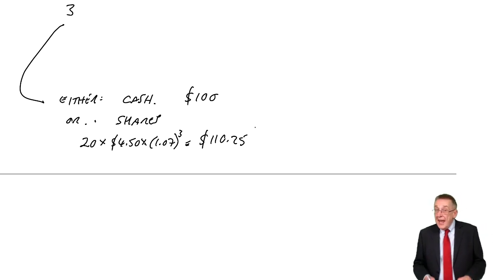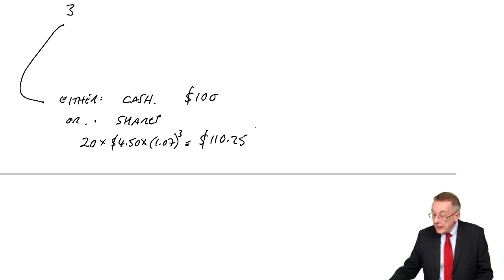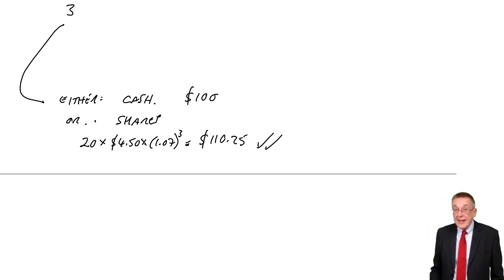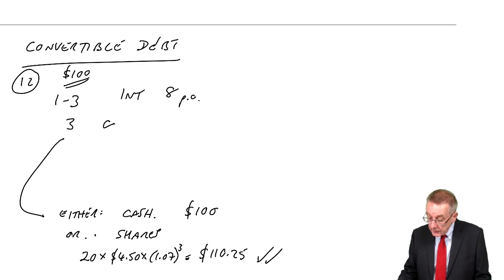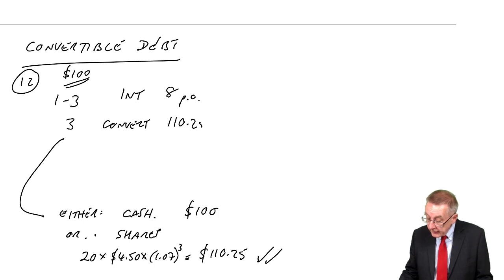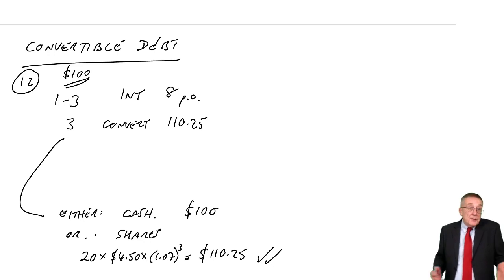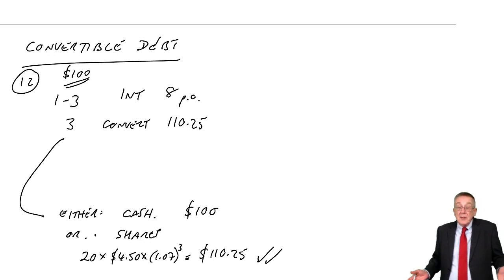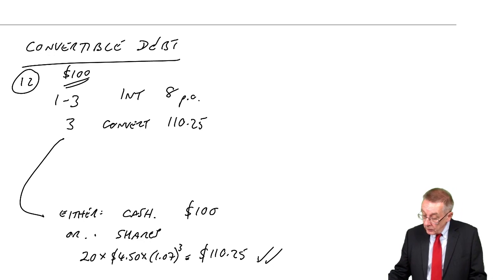As of today, what do they expect to receive on redemption? They'll choose whichever is higher — in this case, the shares. They're expecting on redemption to convert, and the shares will be worth $110.25. Remember, if they take the shares, it's then up to them whether they keep them or sell them. But they currently expect it'll be worth $110.25. The market value is discounted at their required return — the present value at 10%.